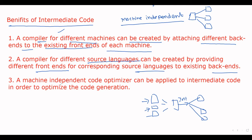Another benefit is that a machine-independent code optimizer can be applied to the intermediate code. The purpose of the code optimizer is to reduce unnecessary information present in the code in order to efficiently generate code. Since the optimizer is machine independent, it can be applied to any type of intermediate language. In the next session we will discuss different types of intermediate code or intermediate language.